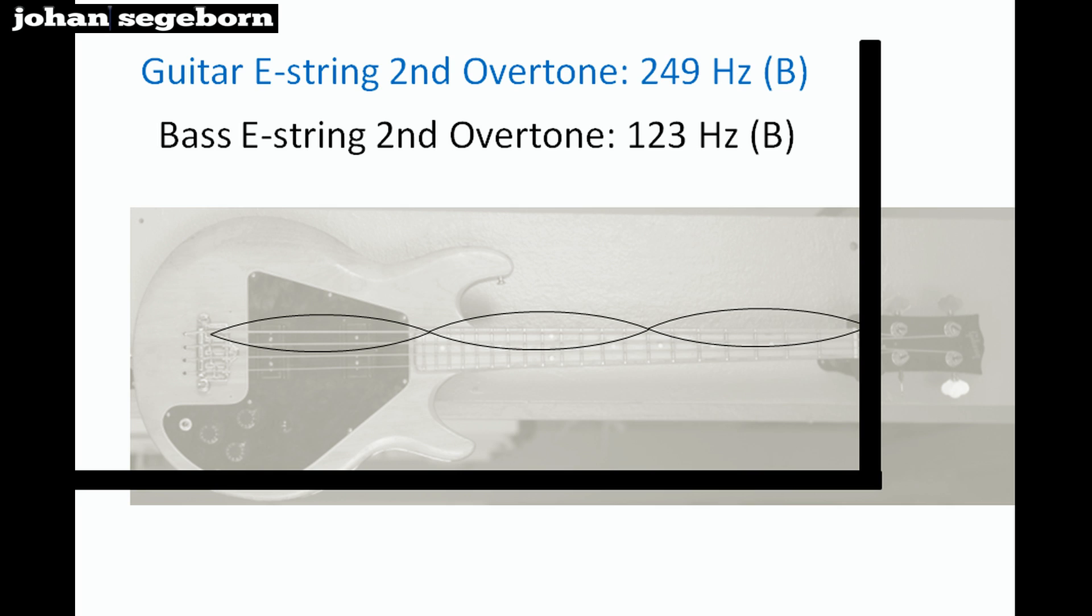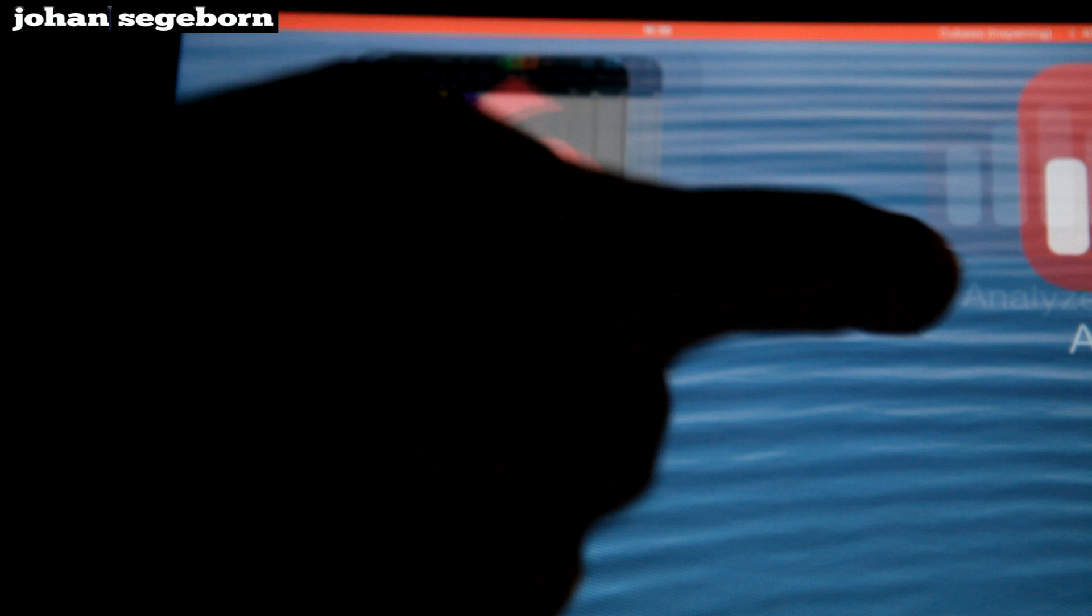The overtones get less and less loud as you move up in frequency. I think they're almost quiet when you get up to eight kilohertz or something like that. But most guitar speakers cut at five kilohertz. So that's the limit. Now let's check out the Spectrum Analyzer iPad app.